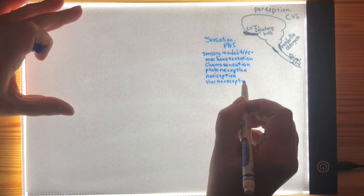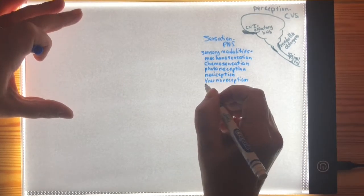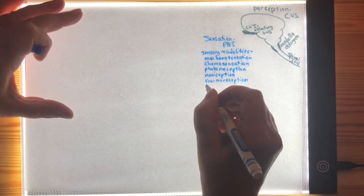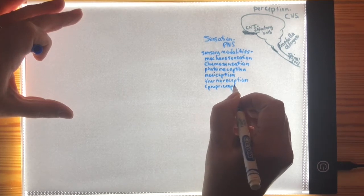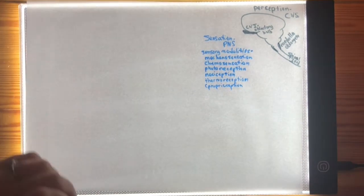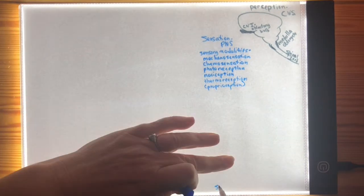Thermoreception is an interesting one. We actually don't know a lot about thermoreceptors, though they're very interesting. We have cold thermoreceptors and warm thermoreceptors. Additionally, proprioception is sort of a sixth sensory modality. Technically, proprioceptors would be considered mechanoreceptors — that would be the closest cousin.